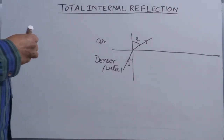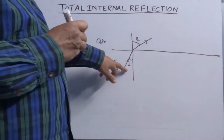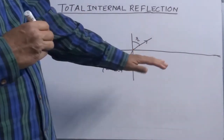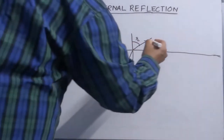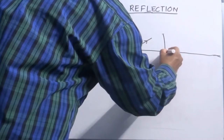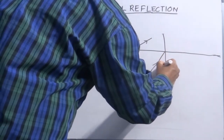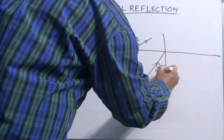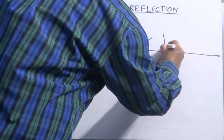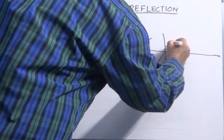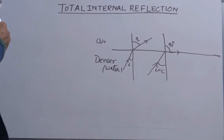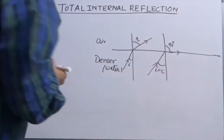What will happen if I increase the angle of incidence in the denser medium? The ray keeps on bending away from the normal. Then, at one particular angle of incidence, the angle of refraction becomes 90 degrees, and the refracted ray becomes parallel to the interface. This angle is termed as the critical angle.